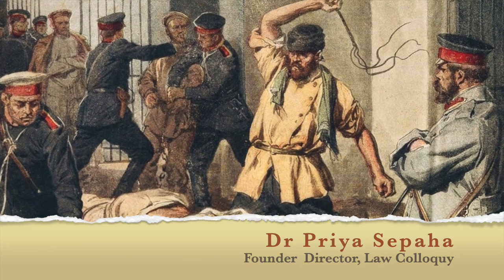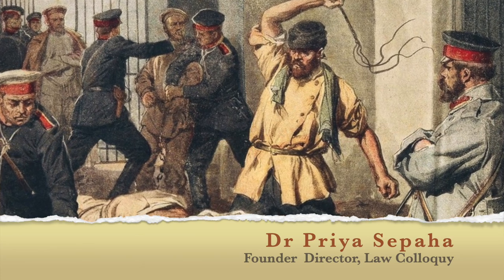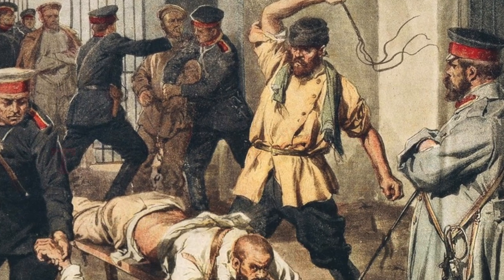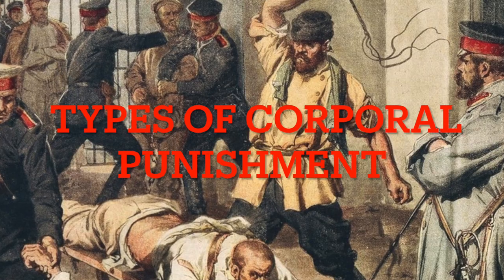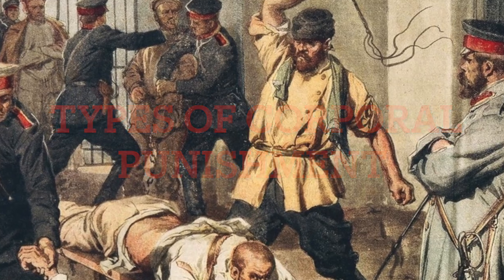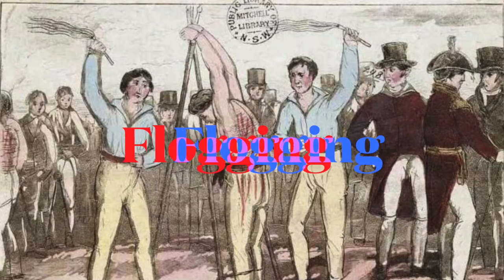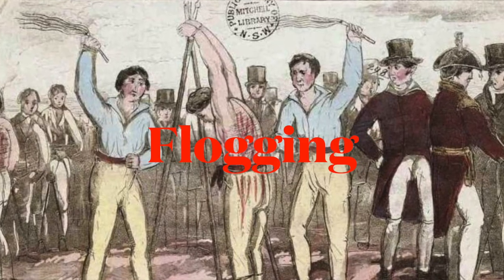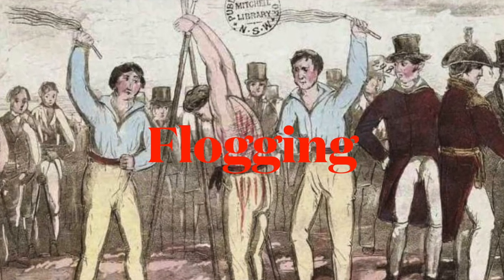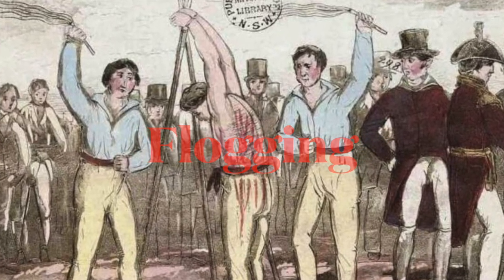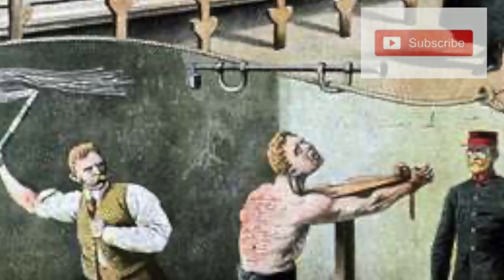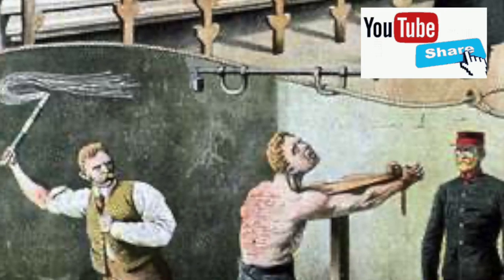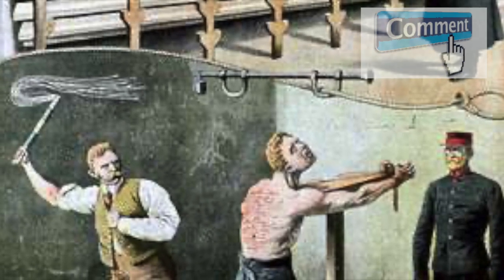Hello everyone, I am Dr. Priya Sipaha and today we are going to discuss the types of corporal punishment. The first form of corporal punishment is flogging, which is considered the most common method of punishing criminals.